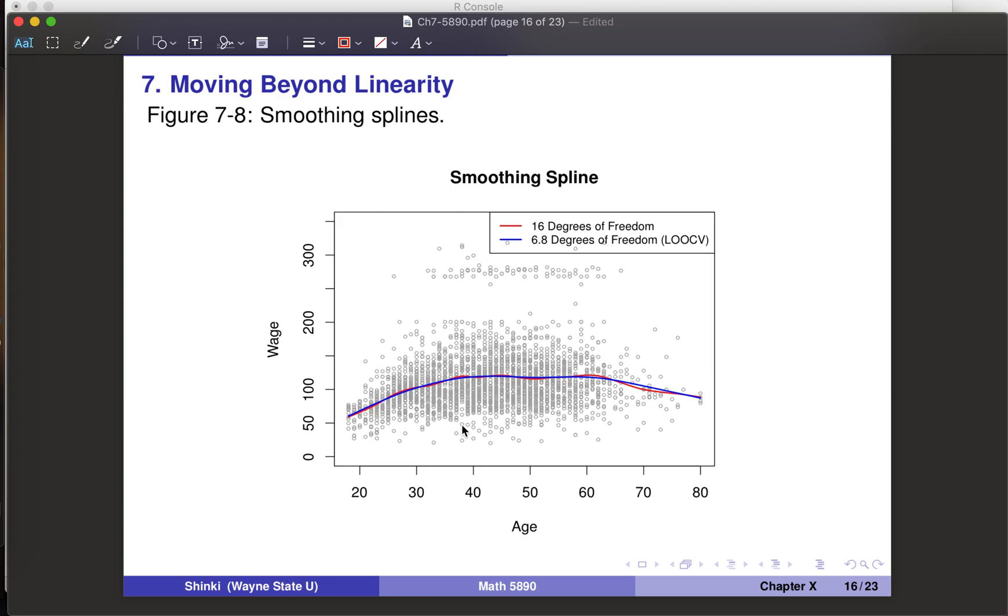This red curve is smoothing spline with 16 effective degrees of freedom. The blue one is 6.8 degrees of freedom. This 6.8 is optimized by cross-validation, so blue curve is optimal based on the data. Red curve is basically too complicated. We have higher degrees of freedom. This data has a lot of variability, so it doesn't make much sense to just fluctuate a little around this blue curve. Blue curve is smoother and describes the overall scatter plot. The blue curve is optimal and red curve is too complicated for this data.